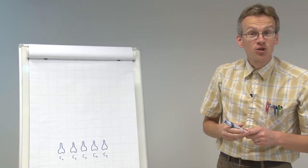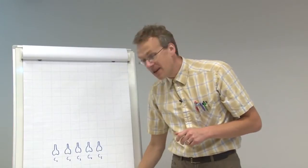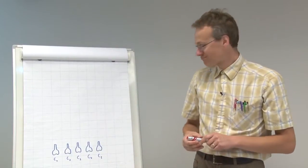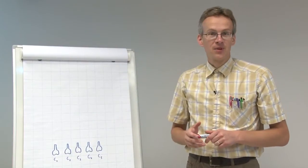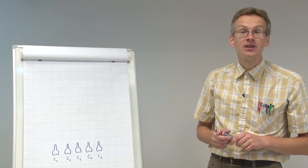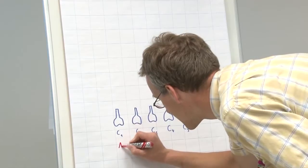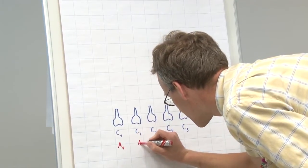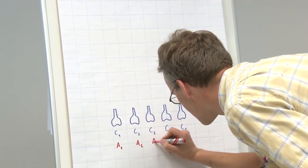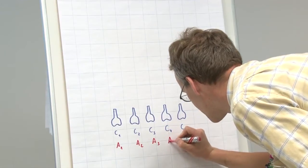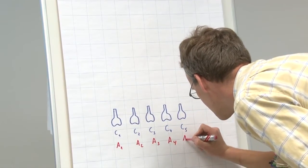And with each of these solutions we make photometric measurement. We measure the absorbance and we get the absorbance values, which we can denote likewise by A1, A2, A3, A4, and A5.